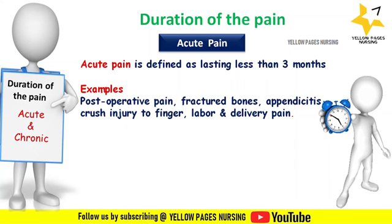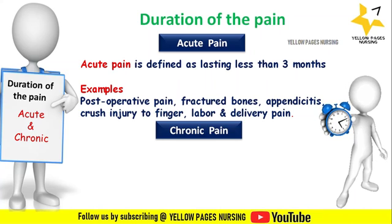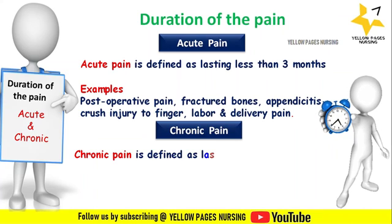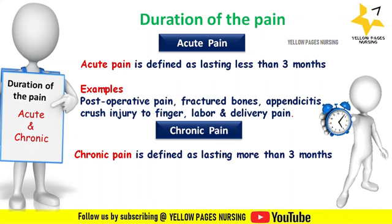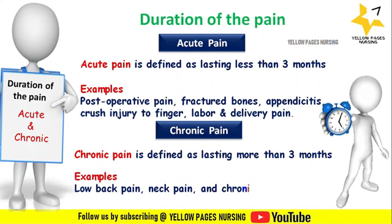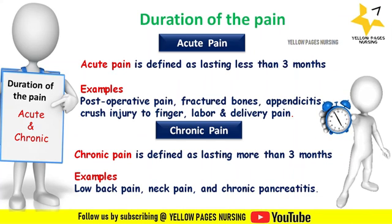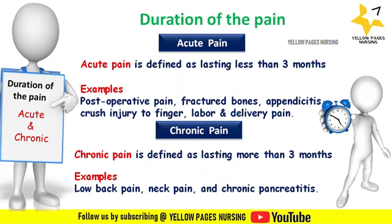Chronic pain is defined as lasting more than three months or beyond the expected course of an acute disease or after complete tissue healing. Examples of chronic pain include low back pain, neck pain, and chronic pancreatitis.